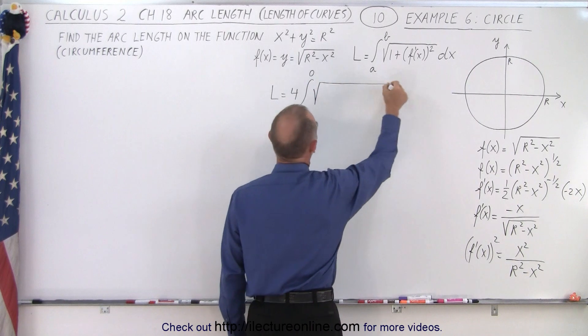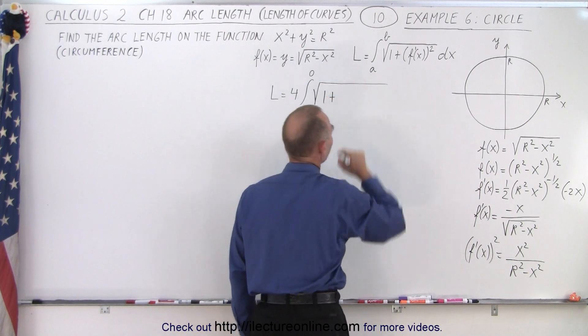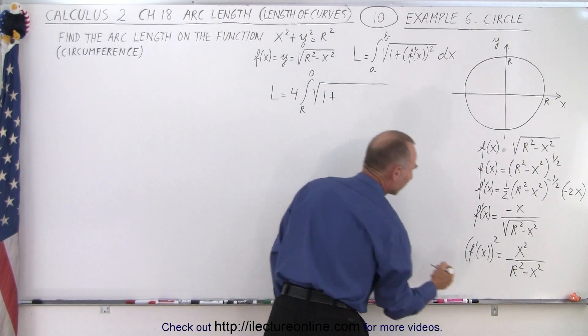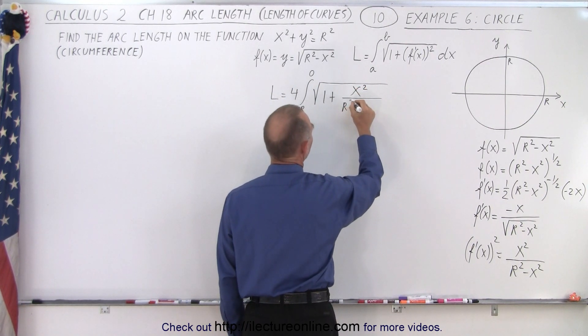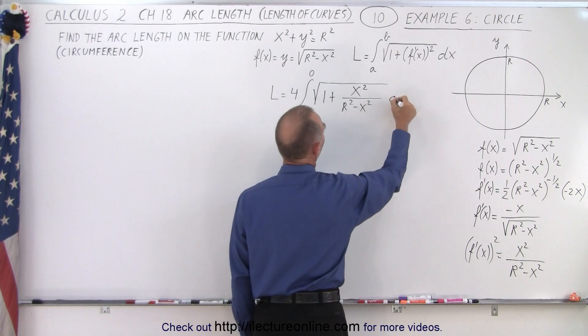And we multiply that times 4 so we have the full length or the full circumference. So therefore we can say that the length is equal to 4 times the integral of going from x equals r to x equals 0 of the square root of 1 plus the derivative of the function squared, which is what we have right here. So it would be x² divided by r² - x² times dx.